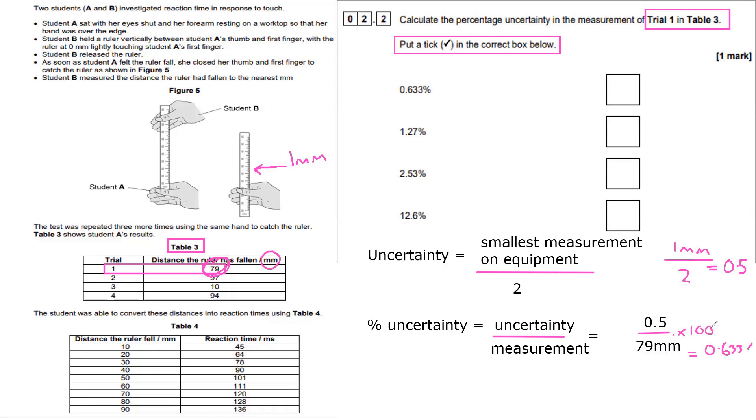So we do 0.5 divided by 79 millimeters times 100, and this equals 0 point, well rounded, 0.633%. And we go, hey, it's the first answer.